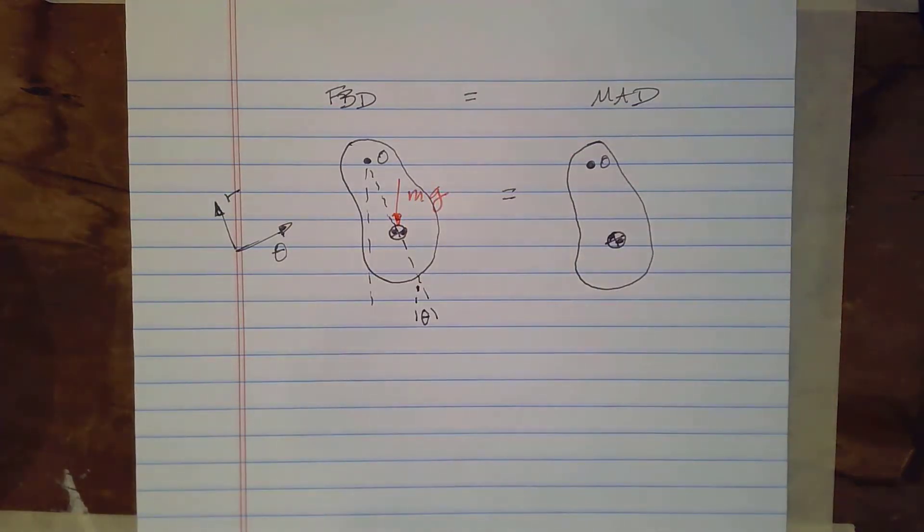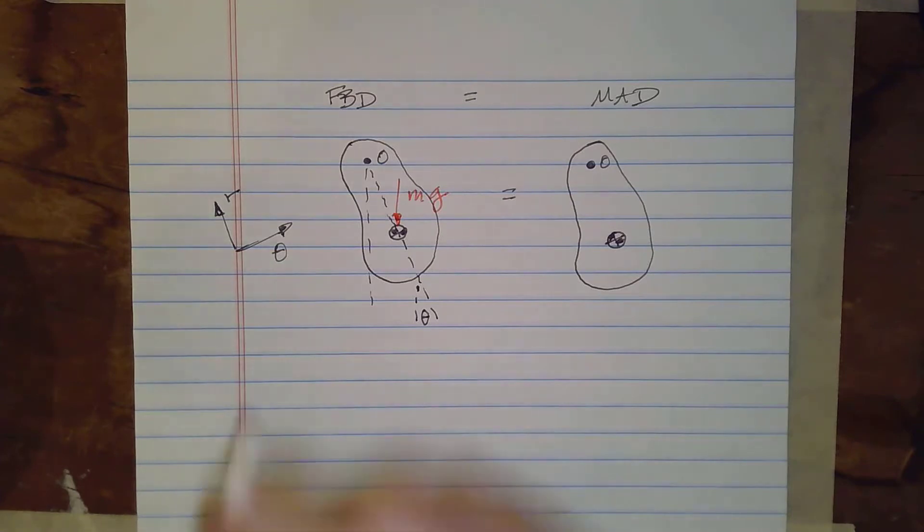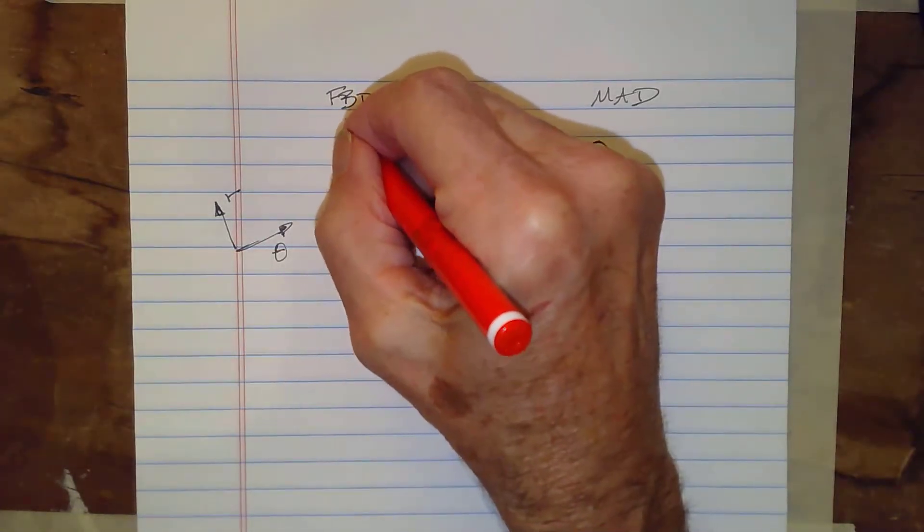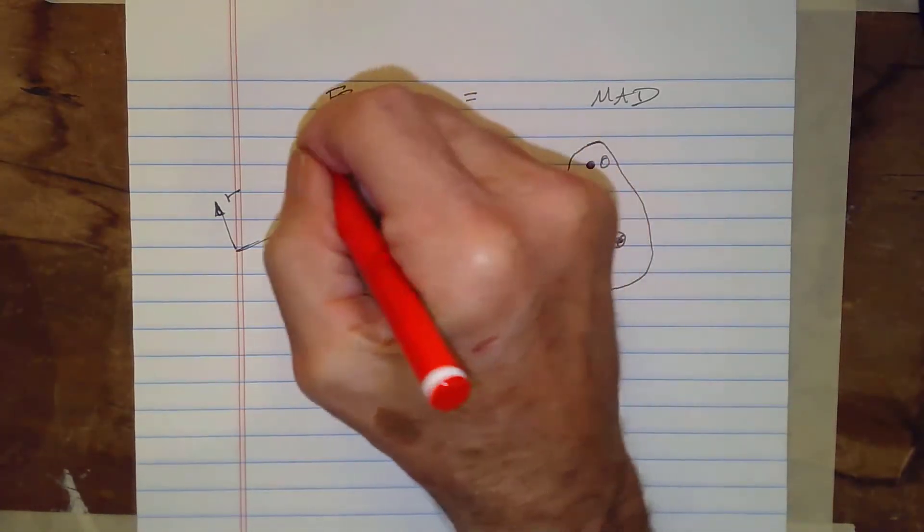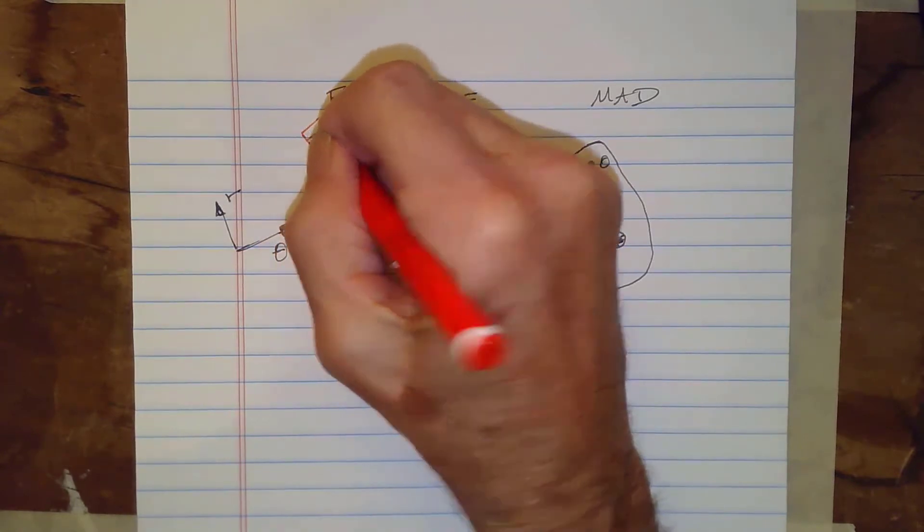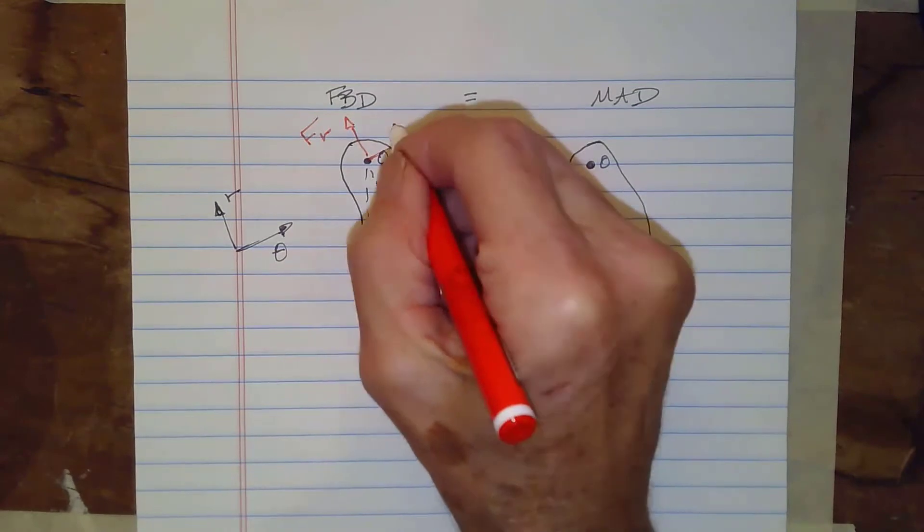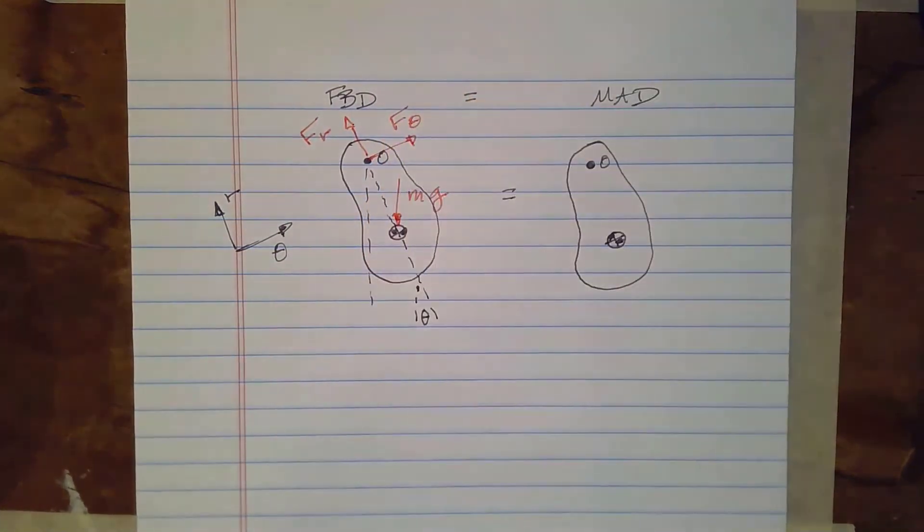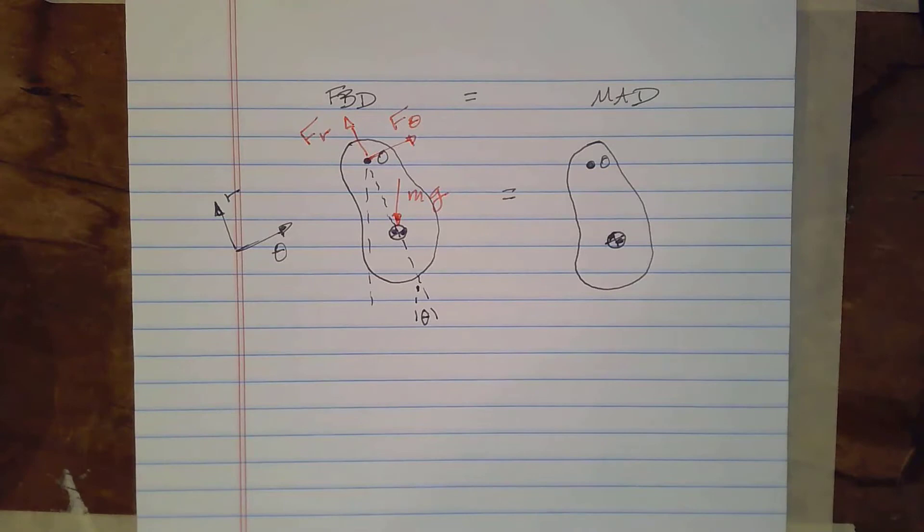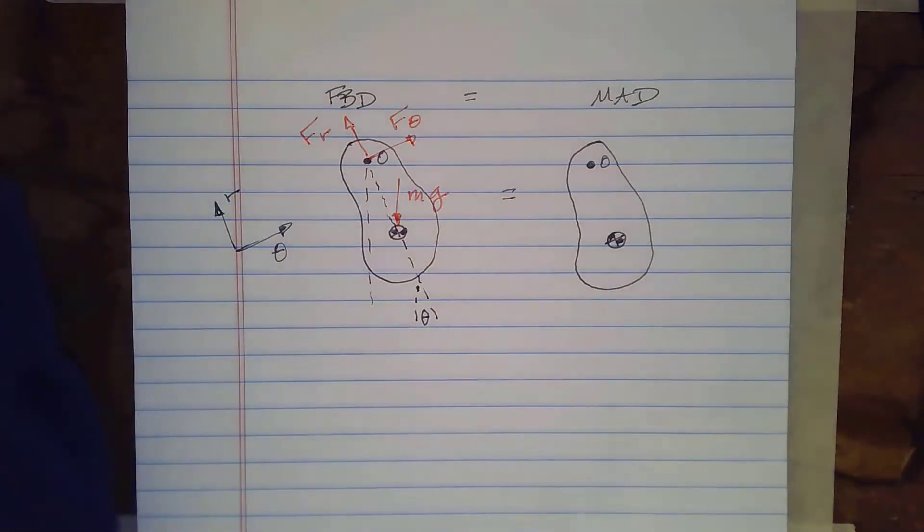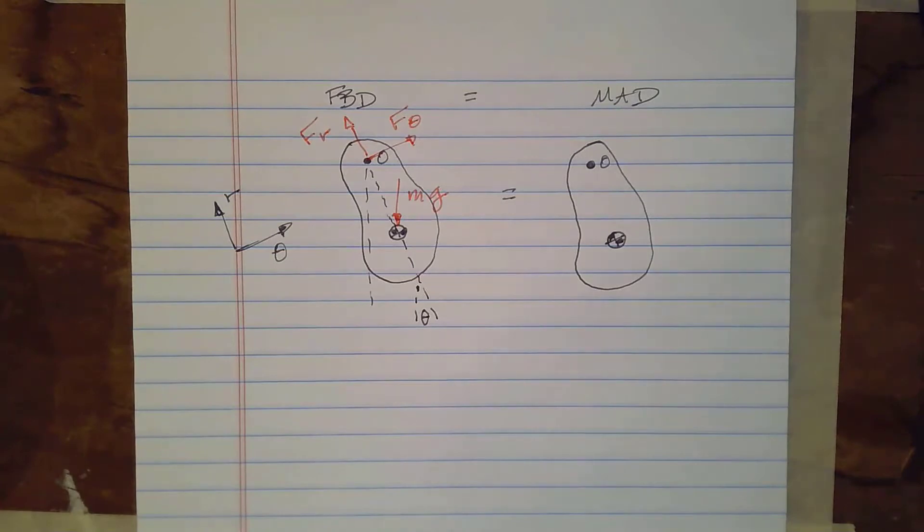Okay and then we have pivot forces at the top and I'll just draw those in the R direction so this will be FR and then we'll have one in the theta direction F theta so those are the only forces that are being applied here.